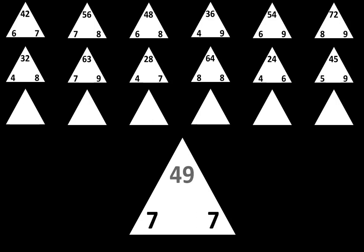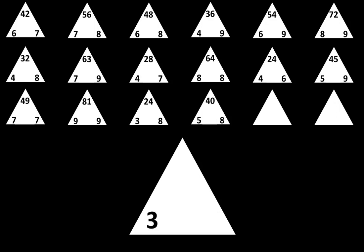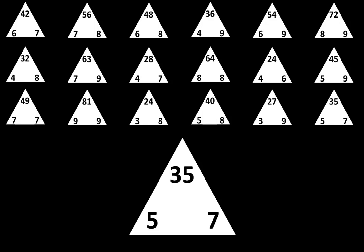Let's move to the next row. The next one is 7 times 7 is equal to 49. The next one is 9 times 9 is equal to 81. The next one is 3 times 8 is equal to 24. The next one is 5 times 8 is equal to 40. The next one is 3 times 9 is equal to 27. The next one is 5 times 7 is equal to 35.